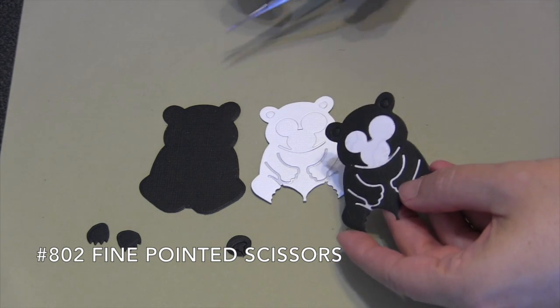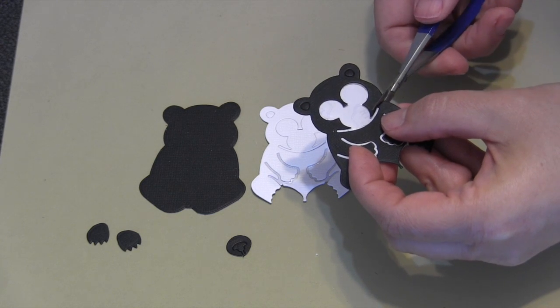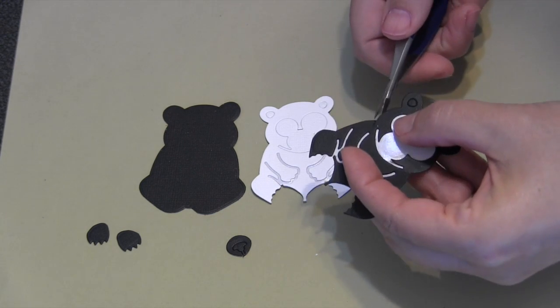You're going to have to do some snipping of these two detail layers to make a multi-tone panda. The first thing I'm going to do, with ever so many apologies to Honey, is I'm going to take the black one and behead him.